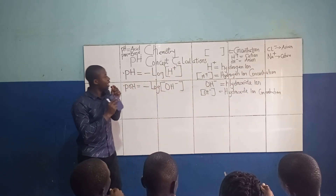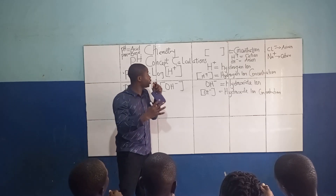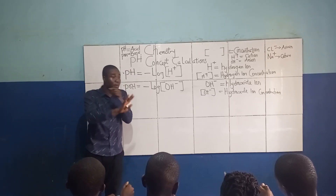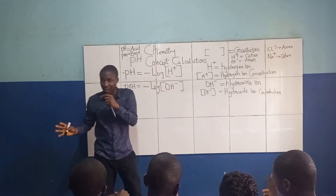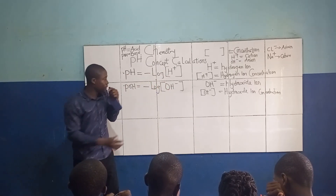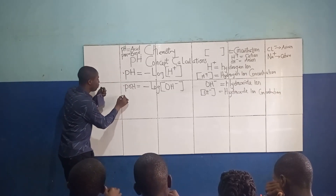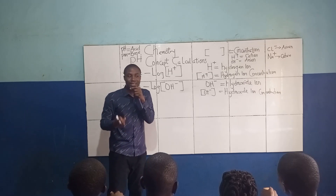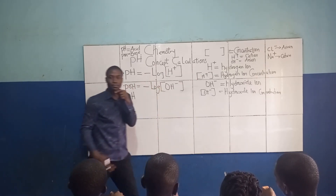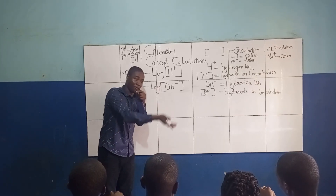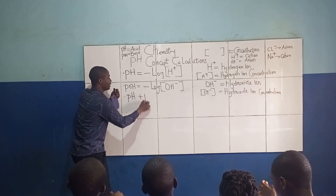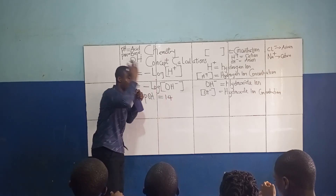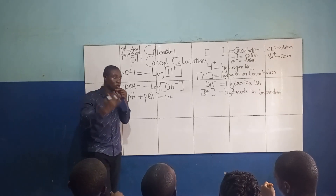We have four formulas to take note of, and we've covered two so far. The third formula to note is that when we add pH and pOH together, the result is always 14 — because the pH scale ranges from 0 to 14. So: pH + pOH = 14.